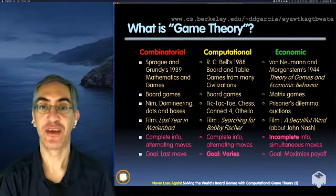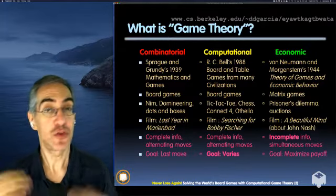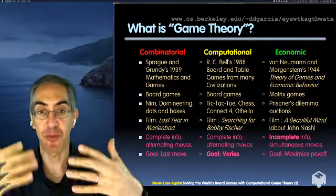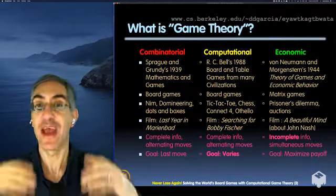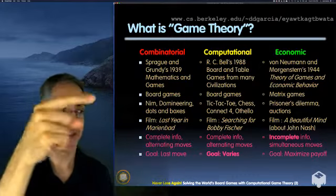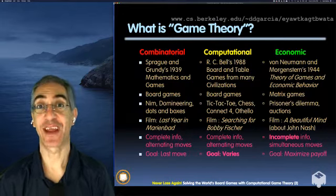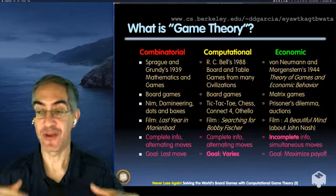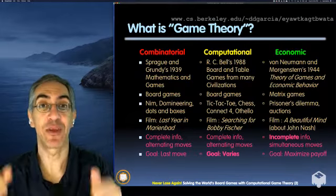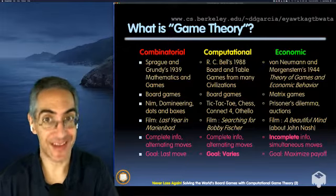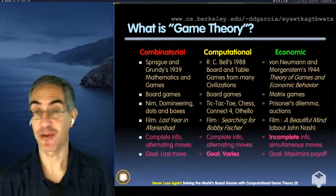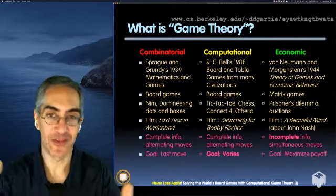On the left is combinatorial game theory — two people playing together where the goal is always to get the last move, with complete information and alternating moves. On the right is economic game theory, which is what they award Nobel prizes for. Examples include silent house bids, the prisoner's dilemma, and rock paper scissors.